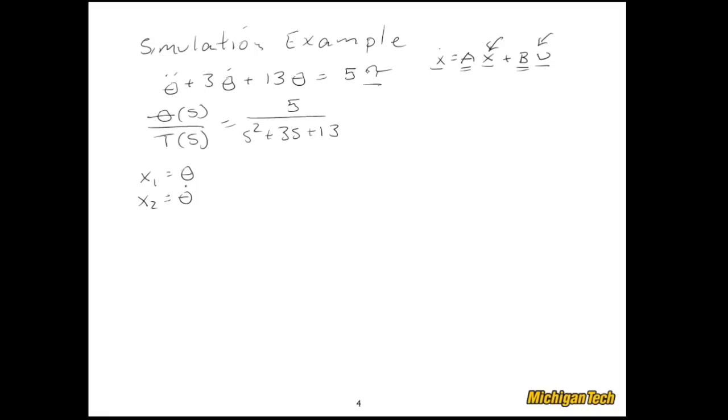Now, remember, in state variable form, remember I did say it's handy to write this down a bunch of times. What we're really looking for is x dot as a function of x and the input u. Now, in our case, our input is tau. And our states are defined over here, x1 and x2. But what I need is x dot. So, I'm just going to say x1 dot, x2 dot. x1 dot is equal to theta dot. And if I want to put it in terms of x, that's x2.